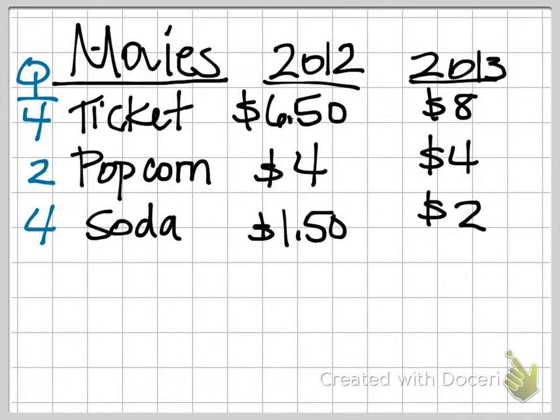So here's a hypothetical example. We're going to assume that our family of four is going to go to the movies. We're going to purchase four movie tickets, two popcorns and four sodas. 2012 in this case is our base year. And in 2012, our prices were $6.50, $4, and $1.50. Then in 2013, a year later, the prices for two have increased. Our ticket is now $8, our sodas are now $2, and the price of popcorn has stayed constant at $4.